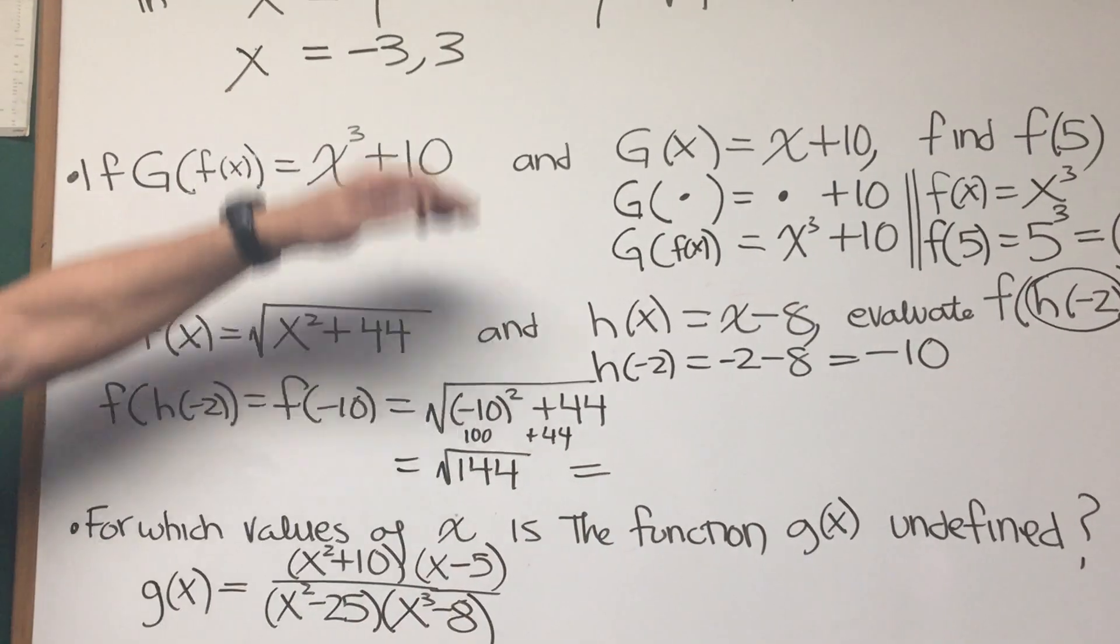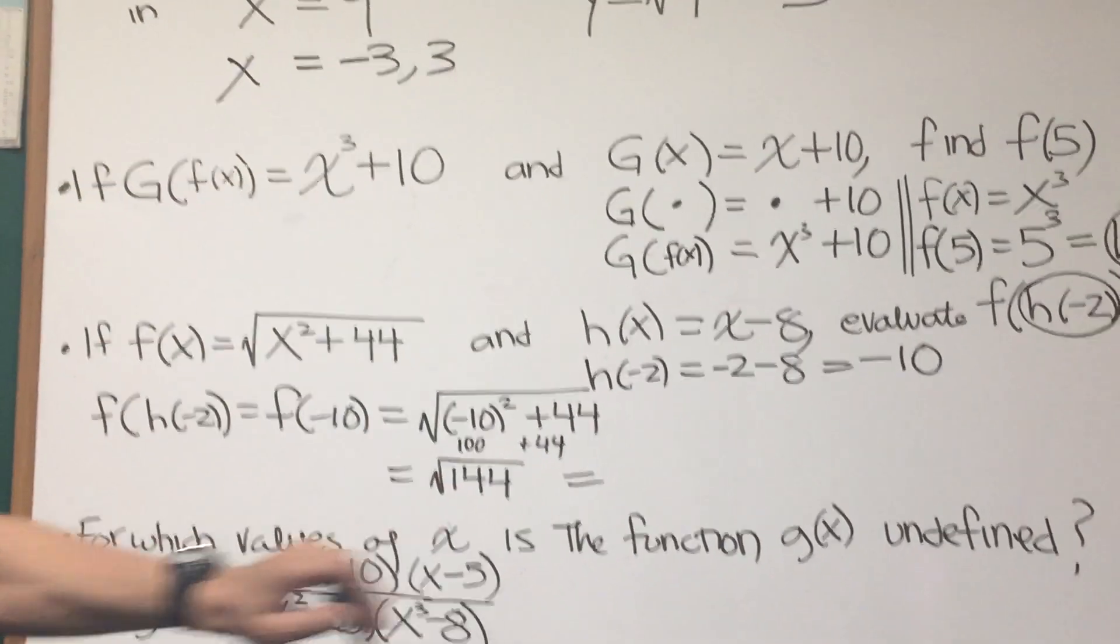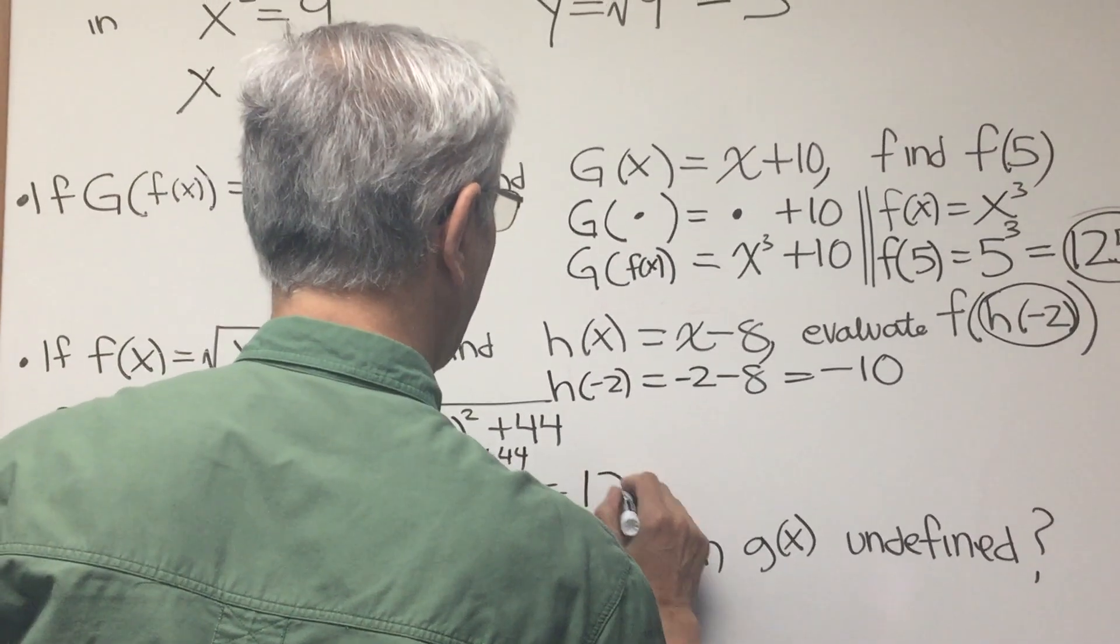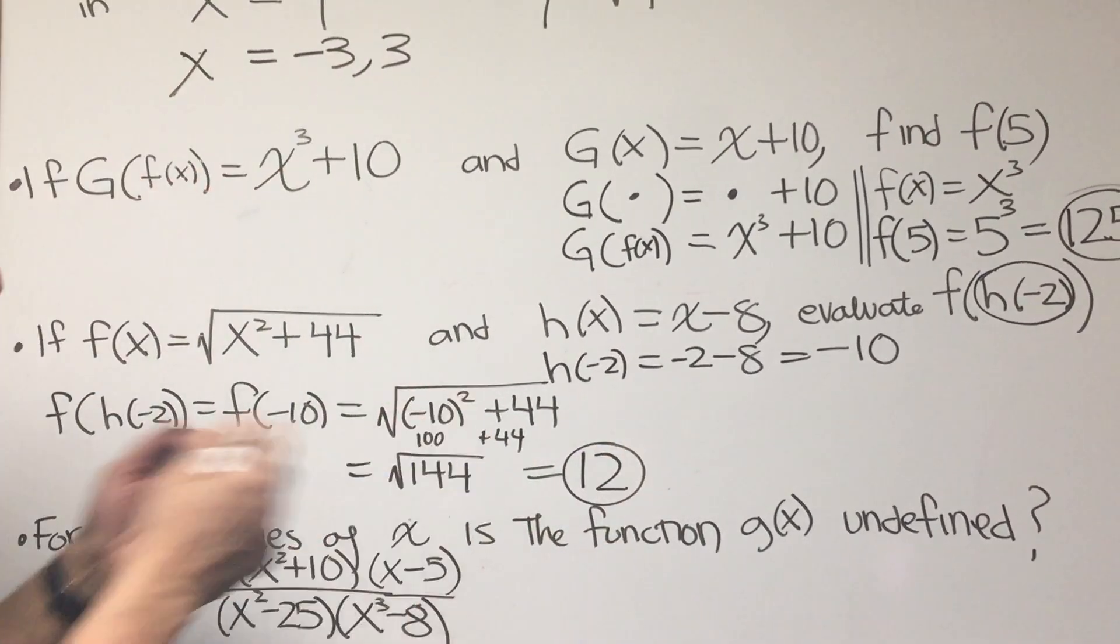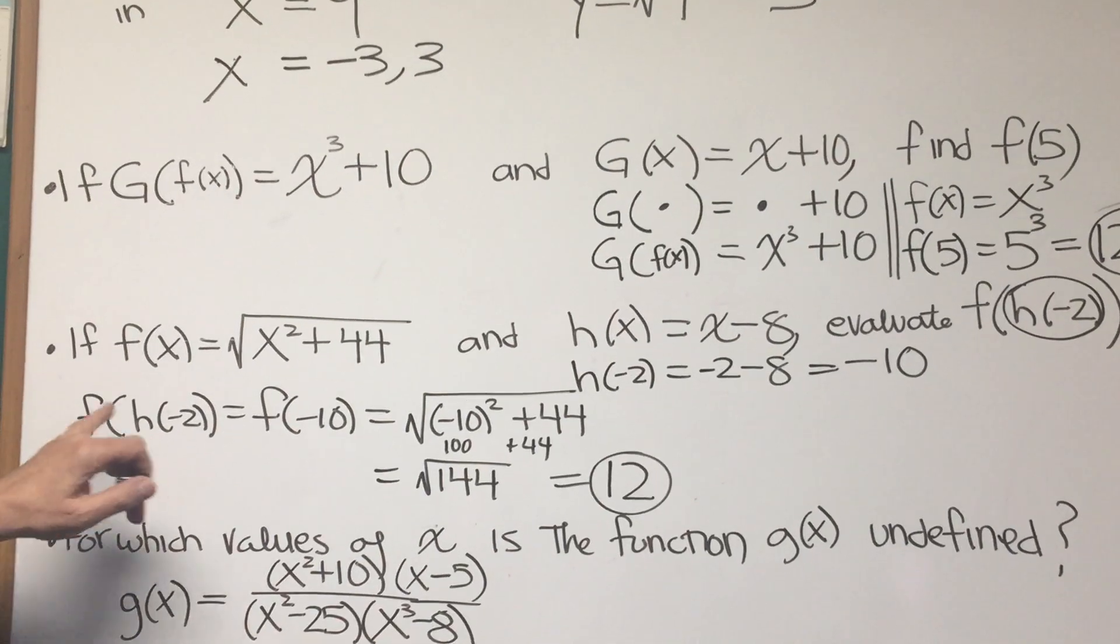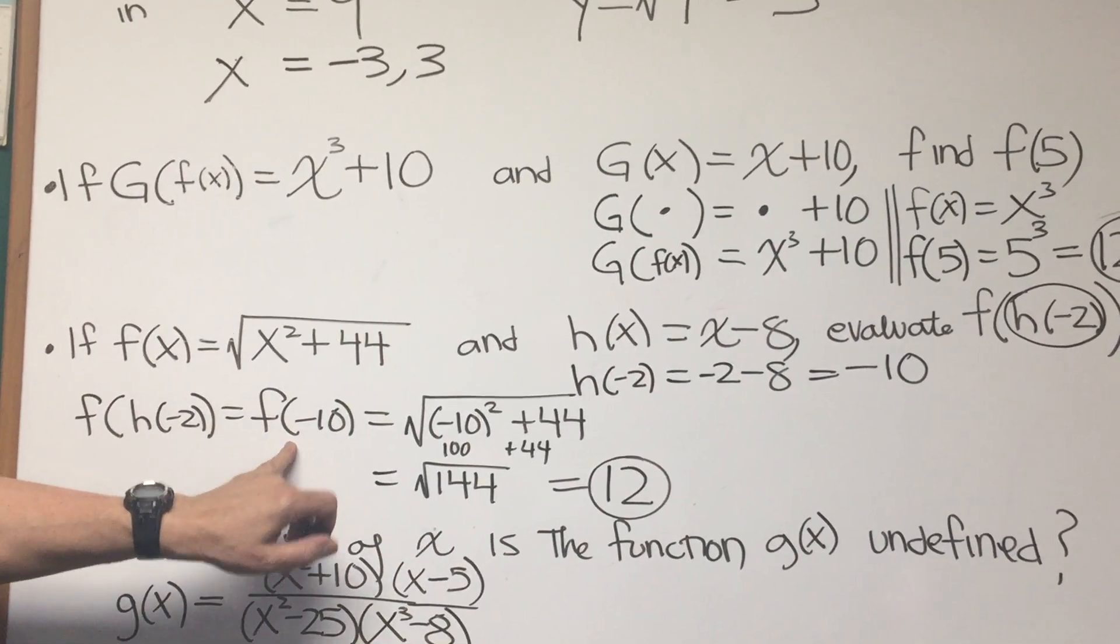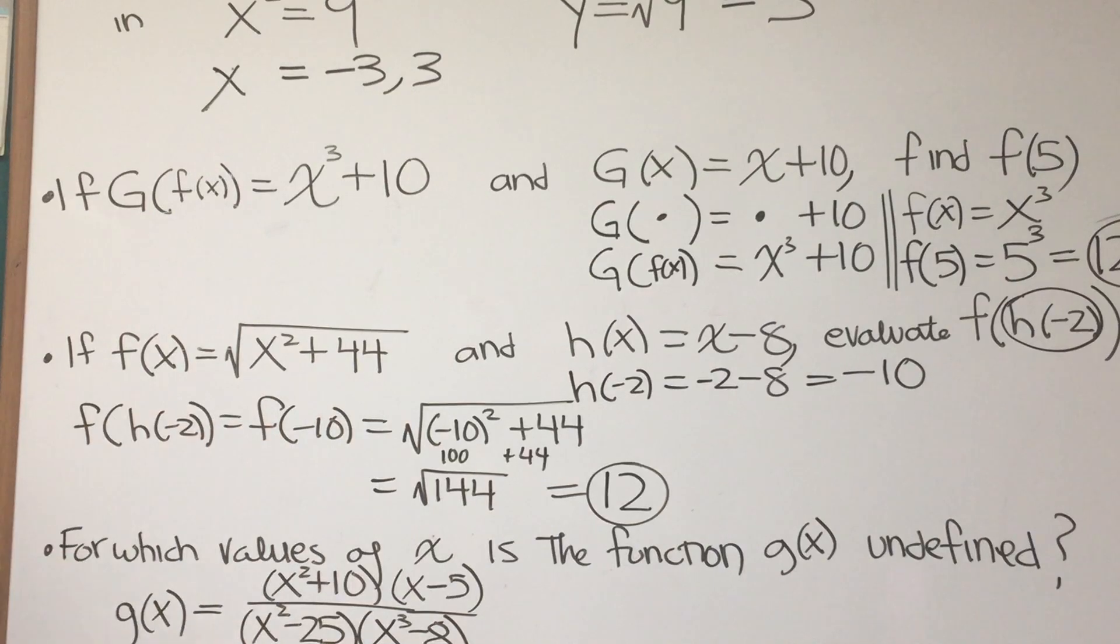And as we saw in our preamble here, the square root of 144 is 12 and only 12, and that's the value of our expression. f of h of negative 2, which is equal to f of negative 10, that's equal to 12.